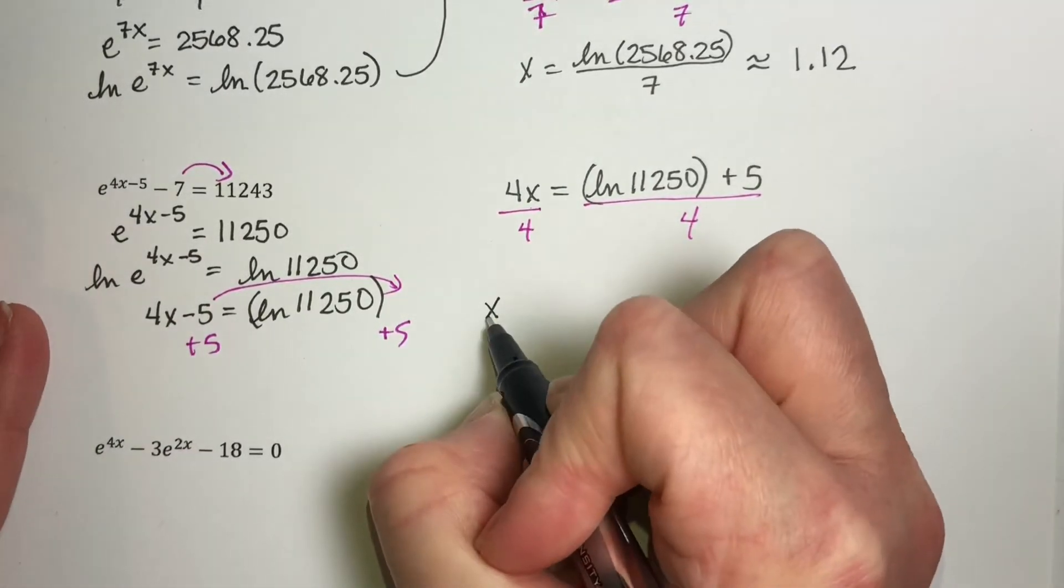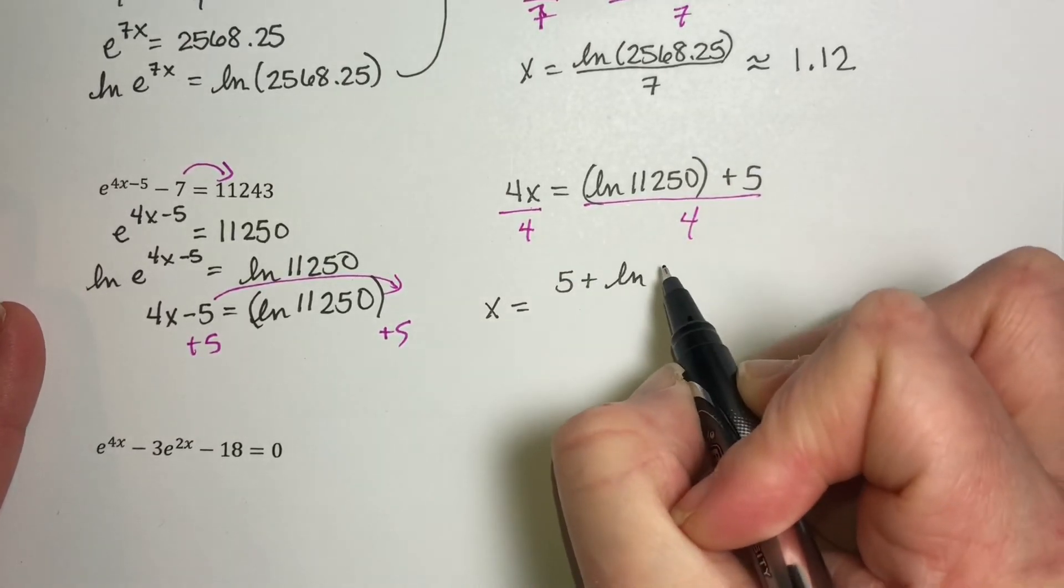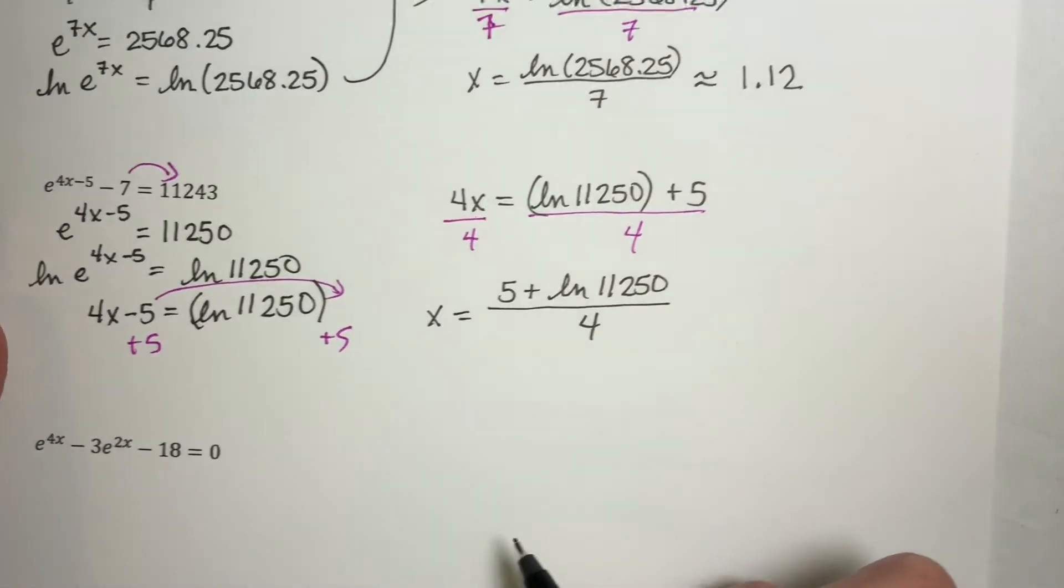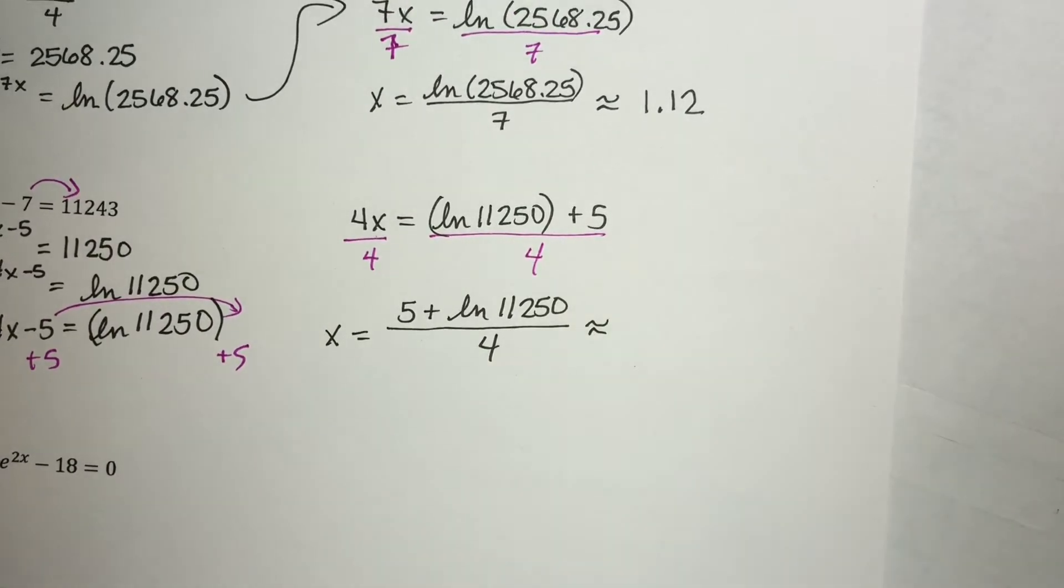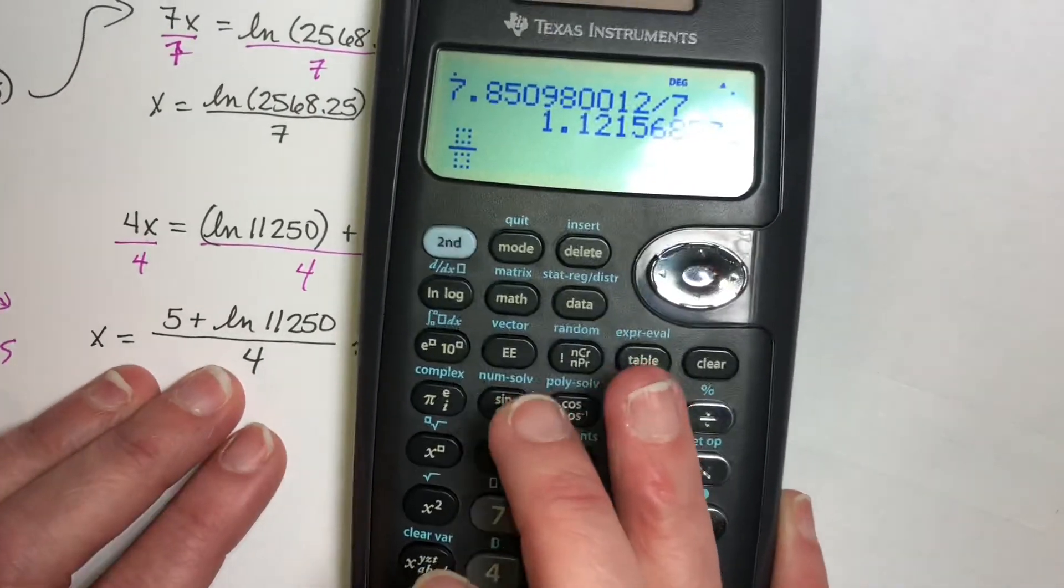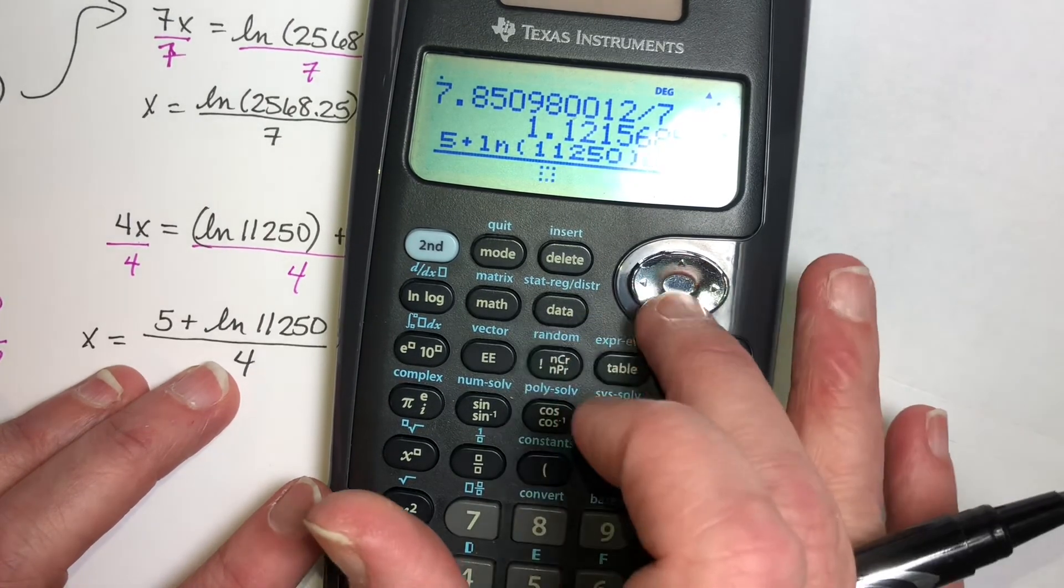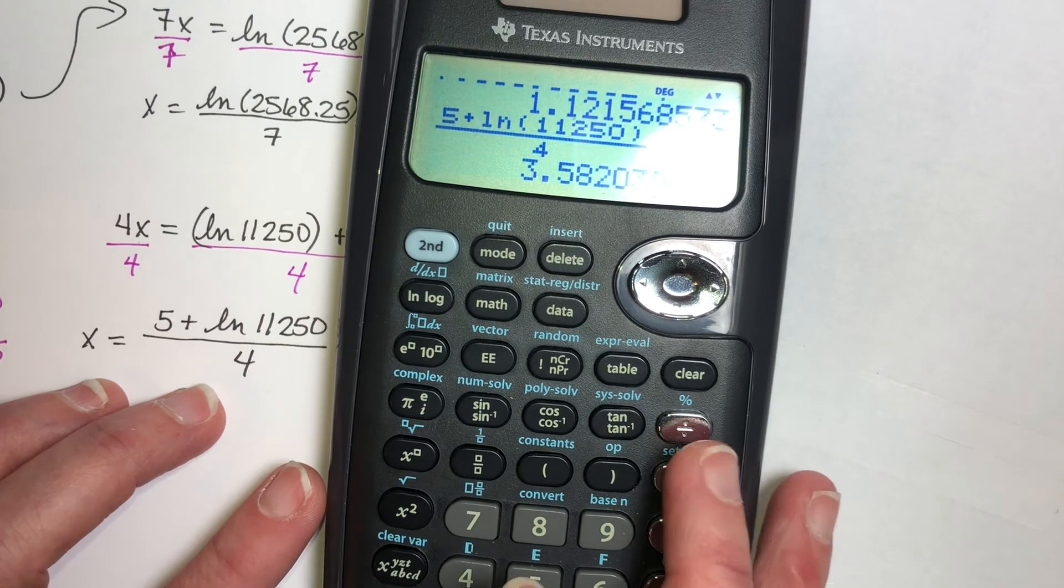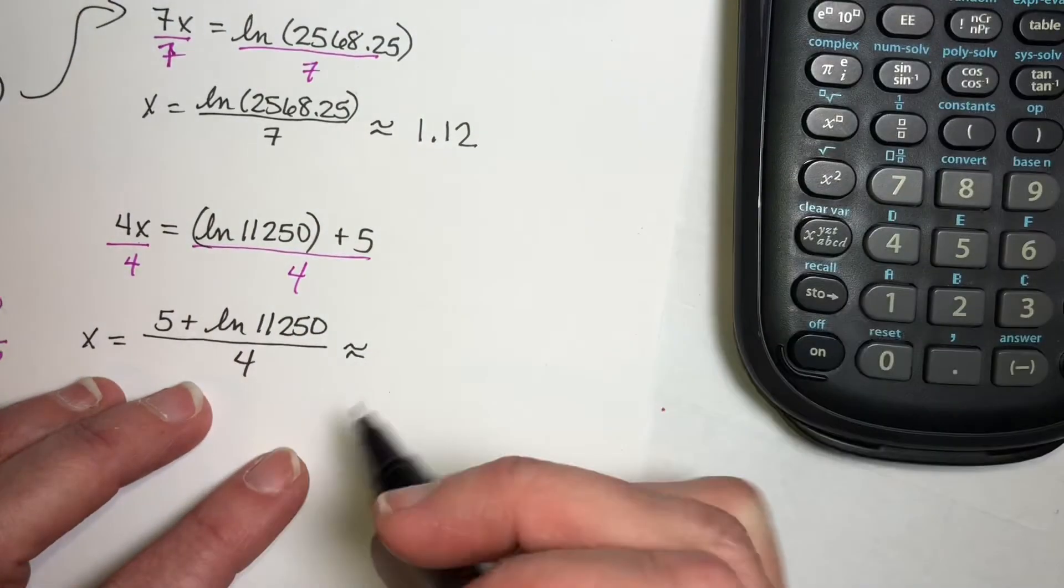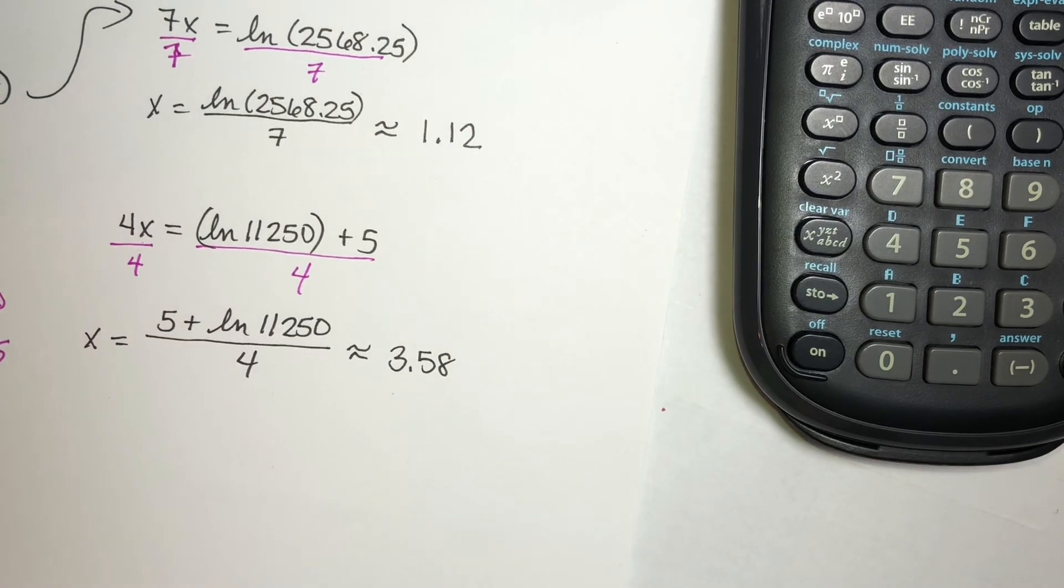And my exact answer is x equals, it may make more sense for you to move the 5 in front if it helps you see what's going on, and then I'm going to divide that by 4. So now it's time to use my calculator. I have a fraction. I have 5 plus natural log of 11250 divided by 4, which gives me, I'm rounding to two decimal places, so 3.58. And that would be the solution to this equation.